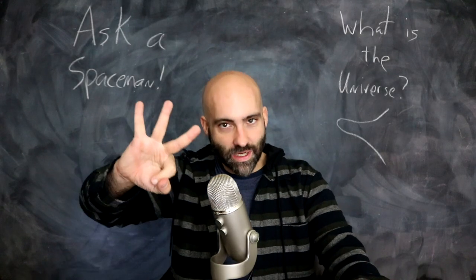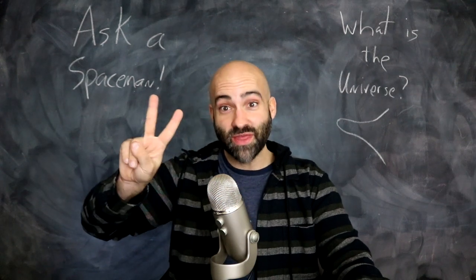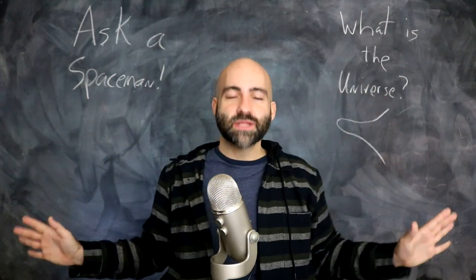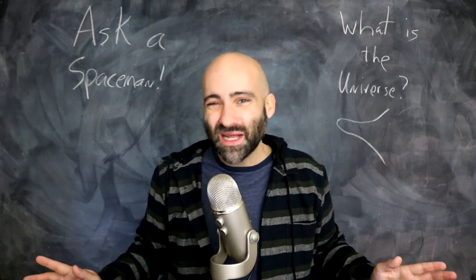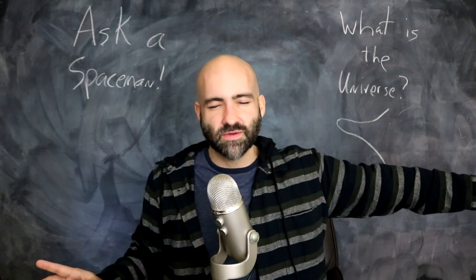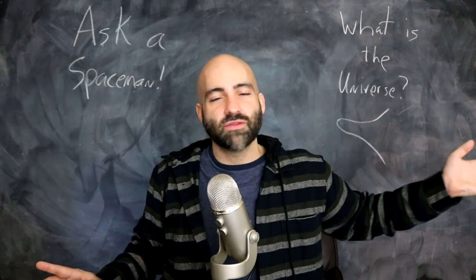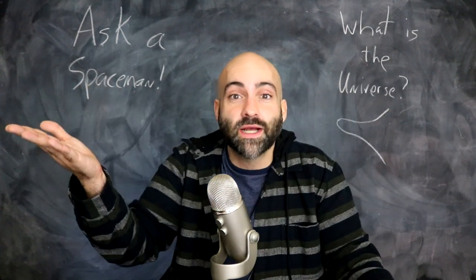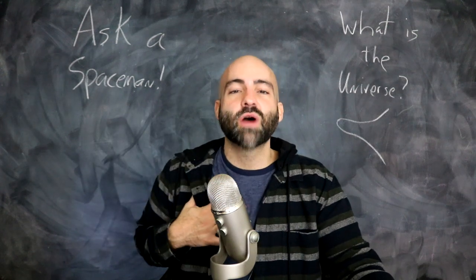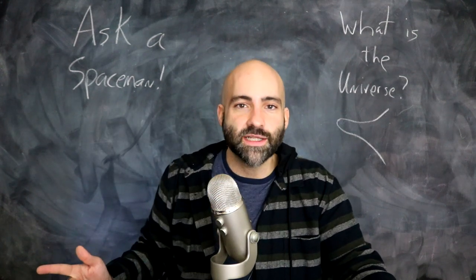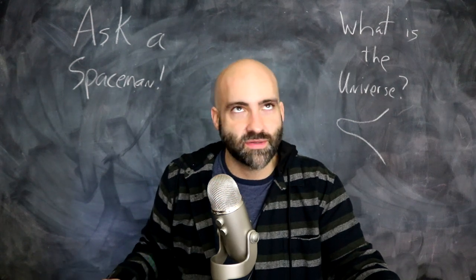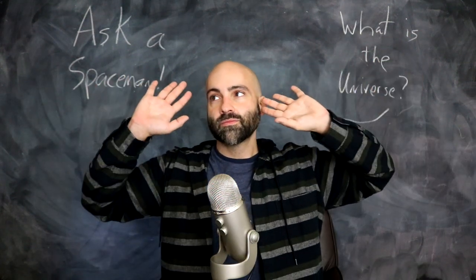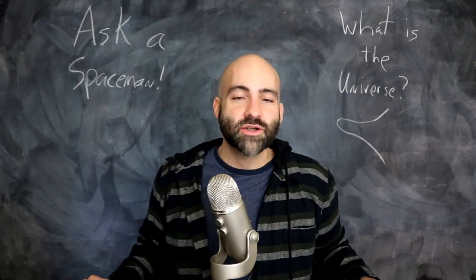Our universe has three main components. Two of them are mysterious and one of them is very complicated — but that's life. Let's start with the stuff we know. The stuff we know is called baryonic matter. It's just called that because it means 'heavy,' but don't worry too much about the name. Baryonic matter is what you are made of — we're talking about protons, neutrons, and electrons.